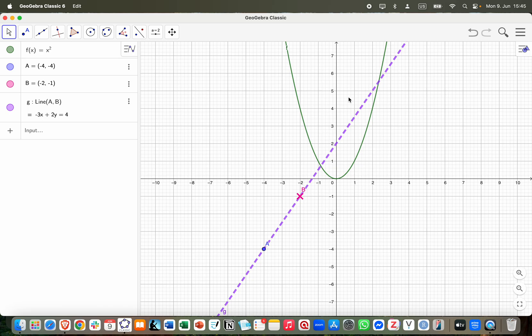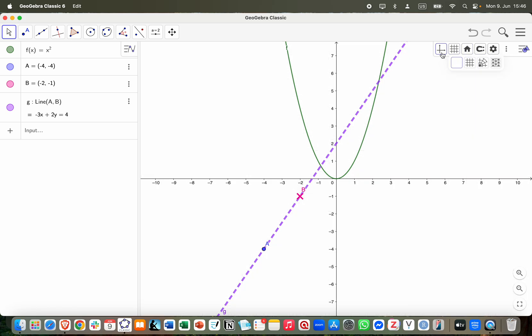As you can see, if you open GeoGebra Classic 6, we have the grid and also the x and y axis. You can remove them also by using the style bar. You have to click on the graphics view, and then just click on the style bar and then just remove the grid if you want and also the axis.